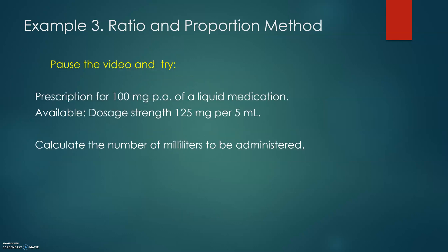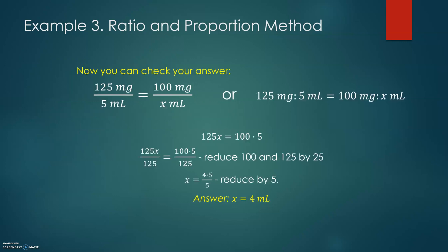Example number 3. Also, please pause the video and try. Prescription for 100 mg P.O. - remember, it's orally or for liquid medication - available in the dosage strength of 125 mg per 5 mL. Please calculate the number of milliliters to be administered. Alright, check your answer now. Your answer has to be 4 mL. And please double check if you simplified your proportion the same way as it's given on the screen.